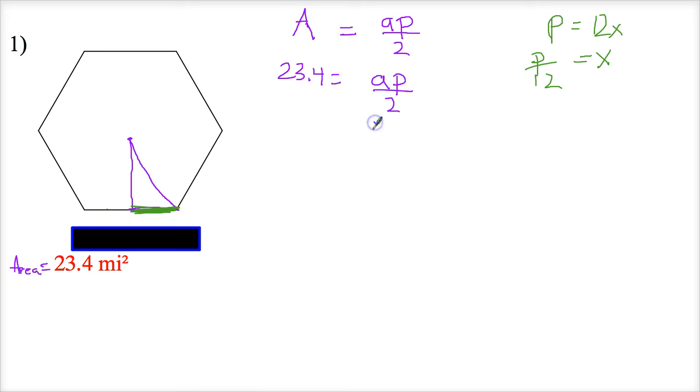So I'll multiply both sides by 2 and end up with 46.8 equals apothem times perimeter. Now, I want to be able to assign this apothem a value of something. So what I'm going to do is just redefine it, divide both sides by P. Those cancel. Apothem is really 46.8 divided by P. That's what I'm going to work with.